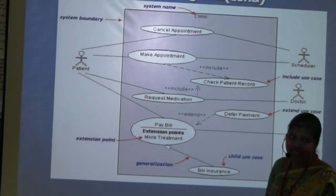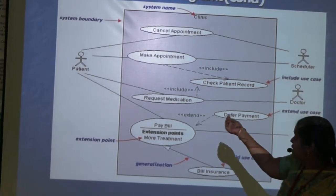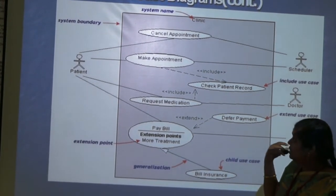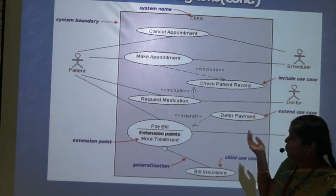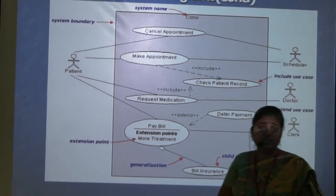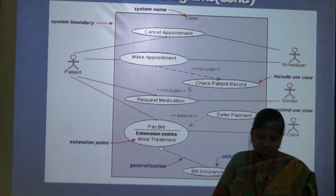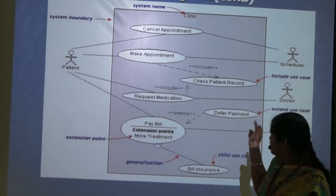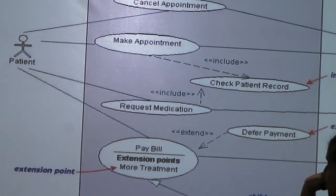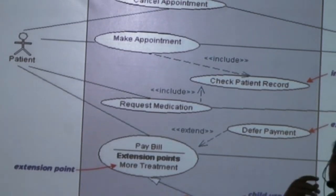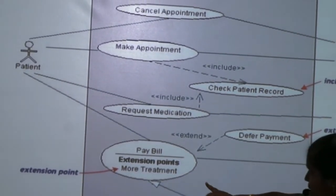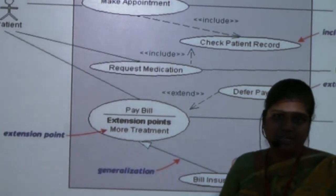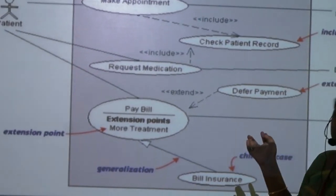Next is the clinical use case diagram. There are actors: patient, scheduler, doctor, and client. The patient can cancel the appointment or make the appointment. Here we use three sets of relationships: include, extend, and generalization. Include is for compulsory actions — for example, the patient must pay or check the patient record and pay for the appointment. Extend is optional — for example, a deferred payment may be an extra action. Generalization is used for the specialized parent-child relationship.